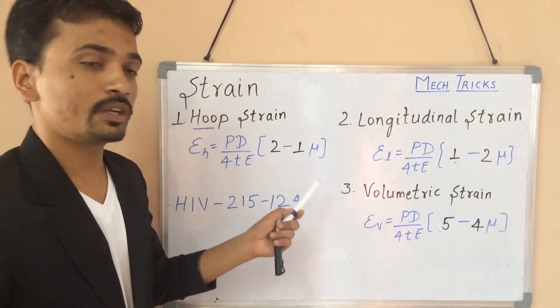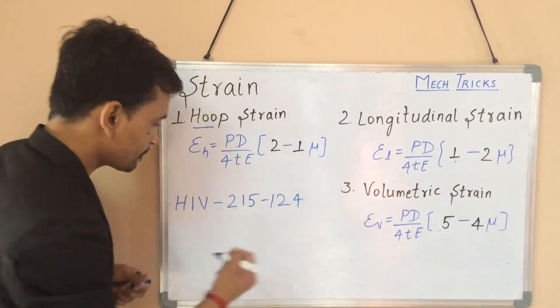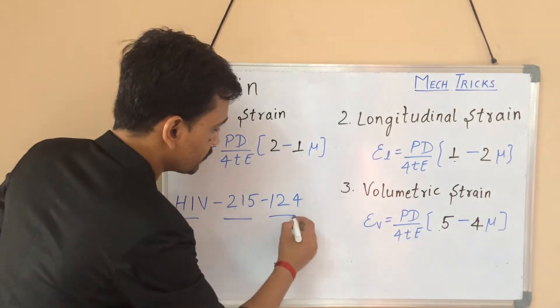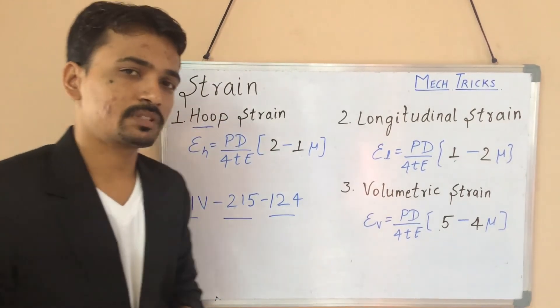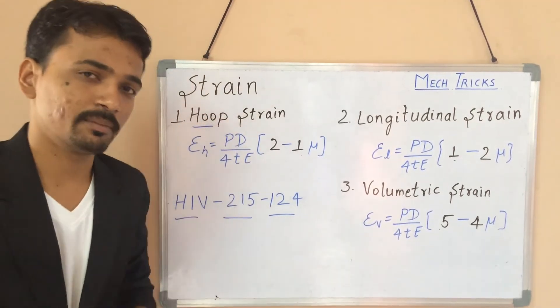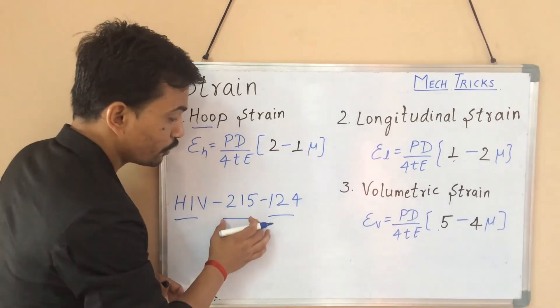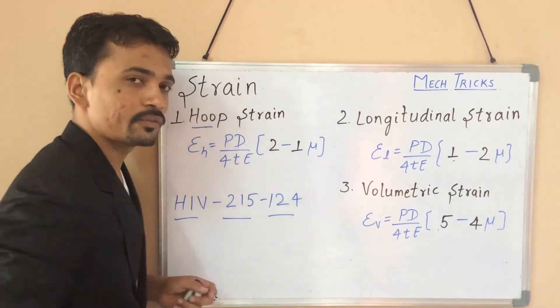And the trick to make the difference in this formula is this HIV 215 and 124. Someone went to a medical shop to purchase a medicine of HIV and he has to pay 215 rupees for 124 medicines.